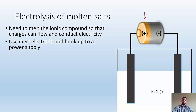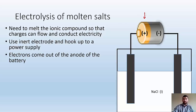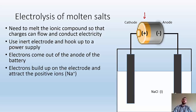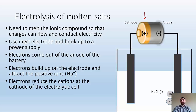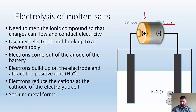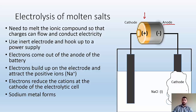Electrons come out of the anode of the battery or voltaic cell — our power source. The electrons build up on the electrode in the molten salt and attract the positive sodium ions. The sodium ions are attracted to those negative electrons and get reduced by them. So the electrons reduce the cations at the cathode of the electrolytic cell. This is the anode for the voltaic cell and the cathode for the electrolytic cell, because that's where reductions occur. So sodium metal is going to form there.